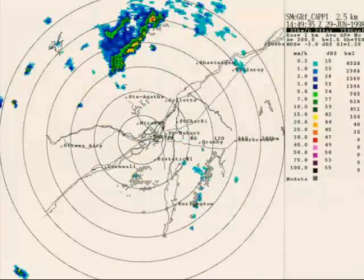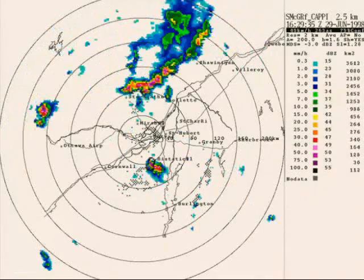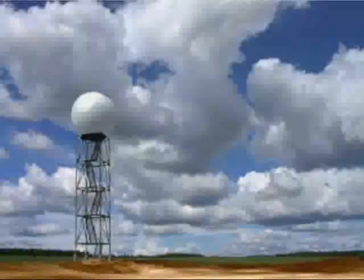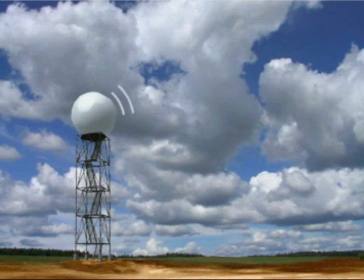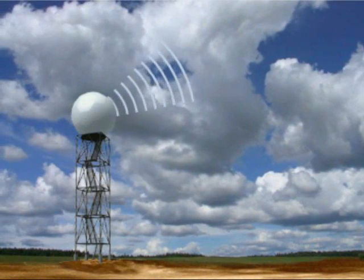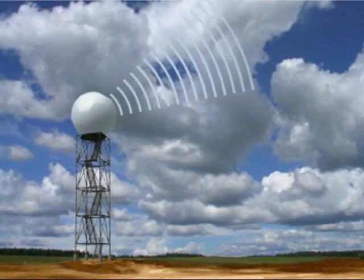To follow atmospheric developments over a larger territory, meteorologists use radar. Radar emits microwaves that detect the presence of precipitation and the movements of air masses.